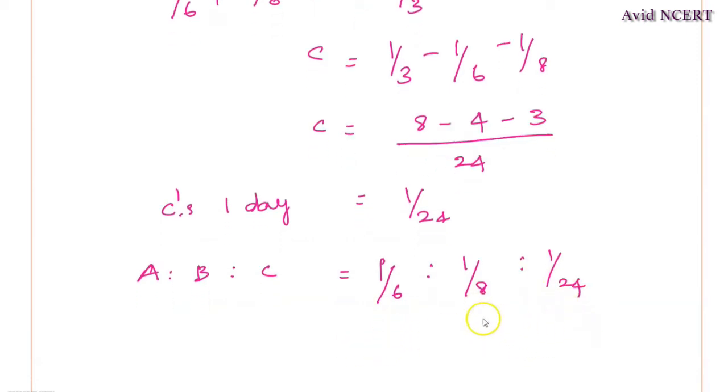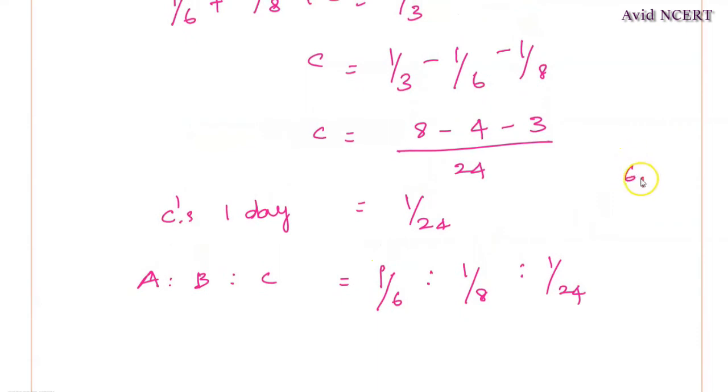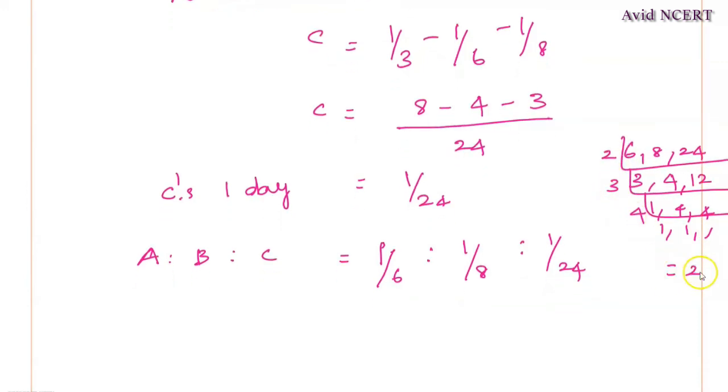Now, we have to find the LCM for 6 is to 8 is to 24, which is 6, 8, 24. Start with the lowest factor, which is 2, 3 times is 6, 2, 4 times is 8, 2, 12 times is 24. Again, start with the lowest factor, which is 3, 1 times is 3, 4, 4 times is 12 and here it is 4, 1, 1, 1. So which is 3 times is 12, 12, 2 times is 24. So the LCM is 24.